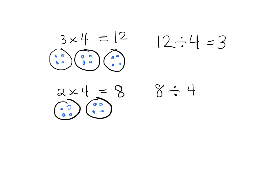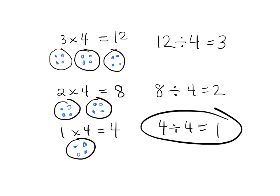Then lastly we could do 1 group of 4, which is 1, 2, 3, 4. So 1 group of 4 is equal to 4. And if we were to write that as a division problem we'd have 4 divided by 4 is equal to 1. So we can see the beginnings of the concept that any number divided by itself is going to equal 1.